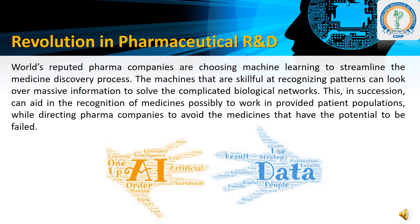The next application is revolution in pharmaceutical research and development. World-reputed pharma companies are choosing machine learning or artificial intelligence to streamline medicinal discovery processes. The machines that are skillful at recognizing patterns can look over massive information to solve complicated biological networks. This can aid in recognition of medicines likely to work in a given patient population, while directing pharma companies to avoid medicines that have the potential to fail.